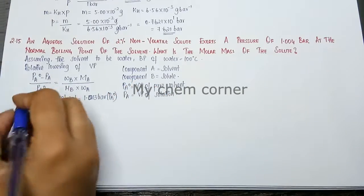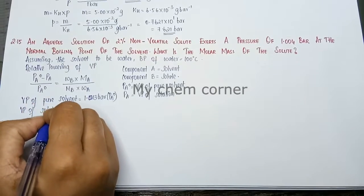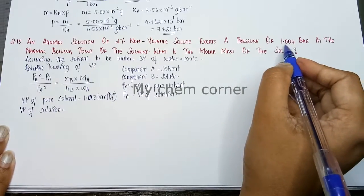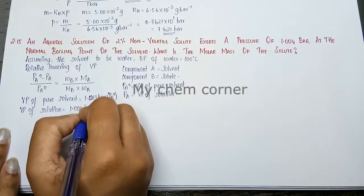Next one pa, that is vapor pressure of solution. It is clearly given to you in the question here - 1.004 bar.